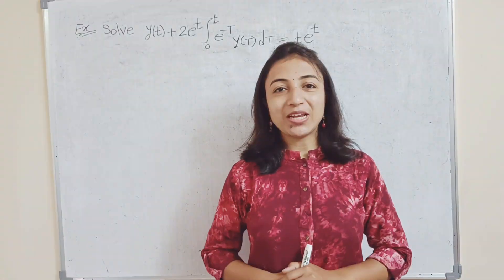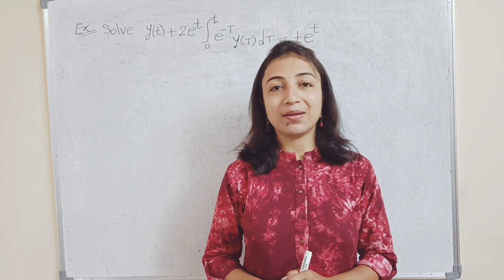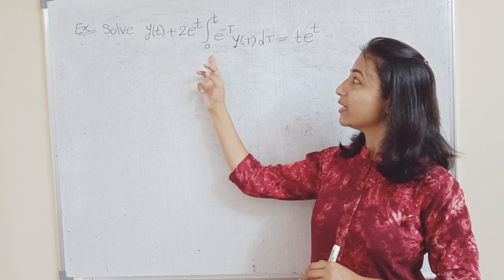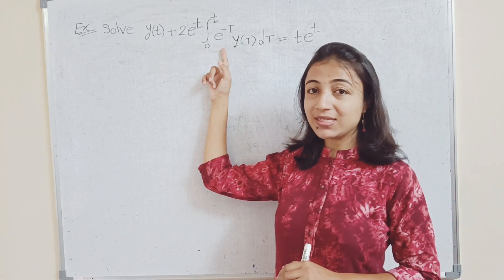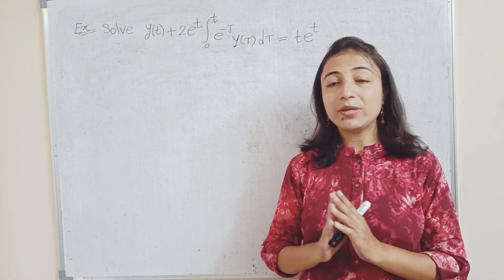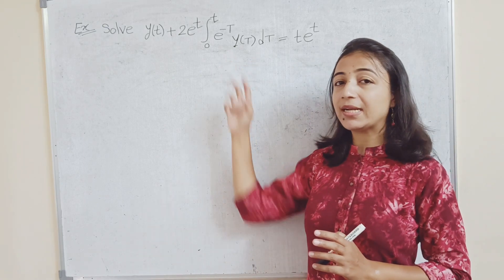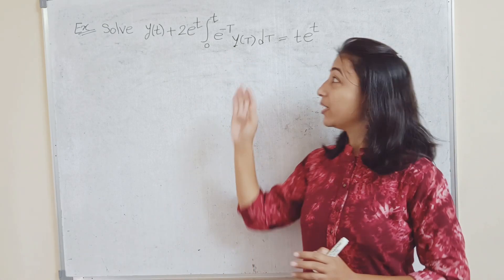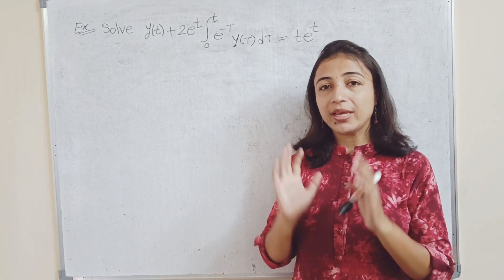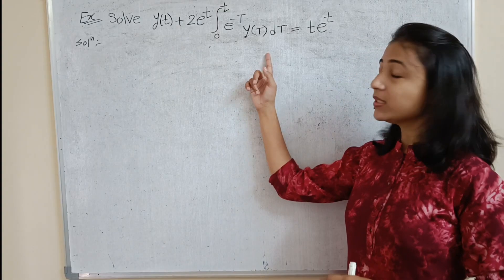Hi everyone, welcome to the lecture on Laplace transformation. In this video we are going to discuss an interesting example. The question is: we have to solve y(t) plus 2e^t times the integral from 0 to t of e^(−T)·y(T) dT equals t·e^t. This is a new type of example, so let's see how to solve it.